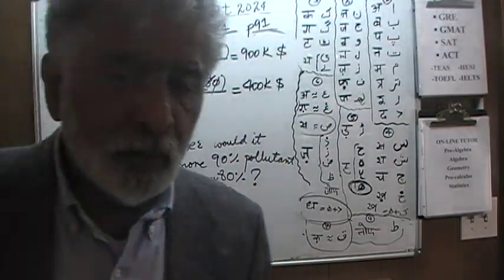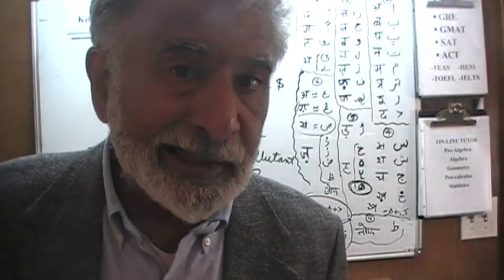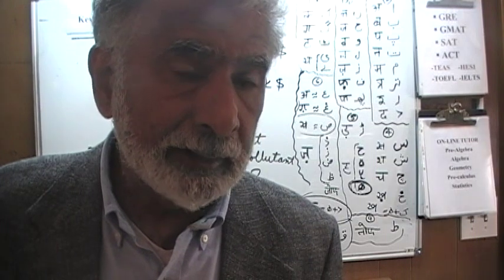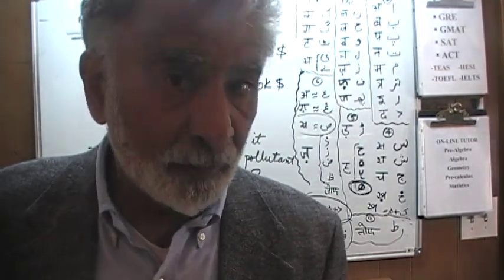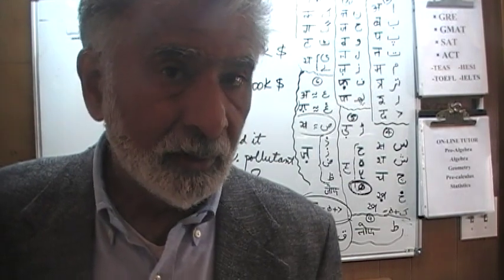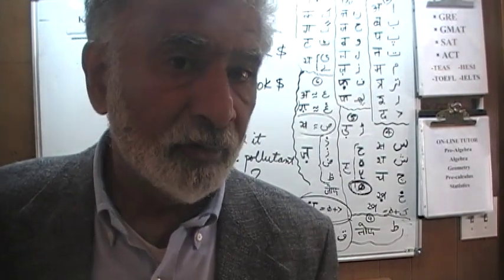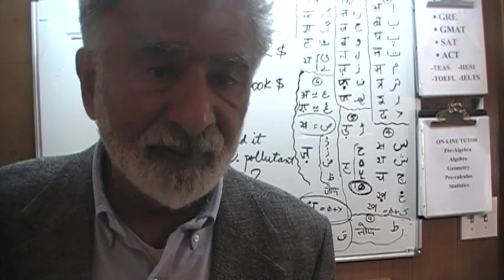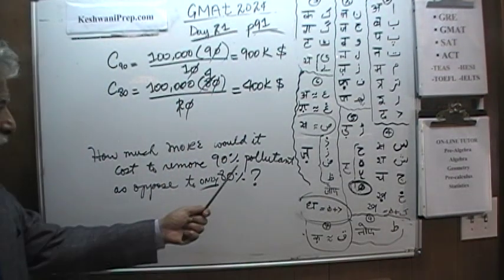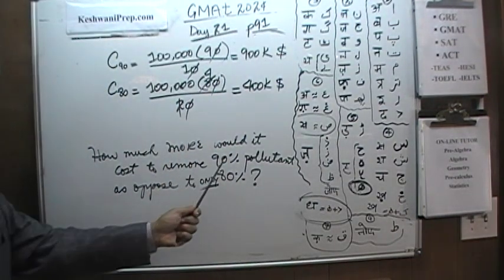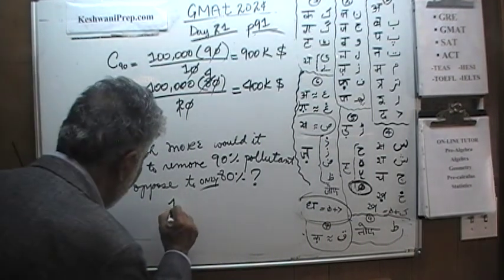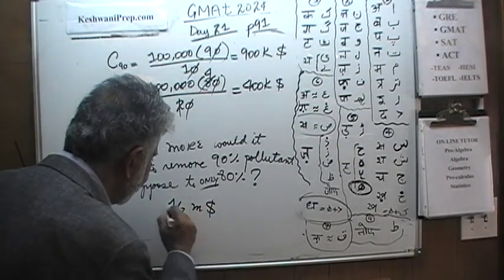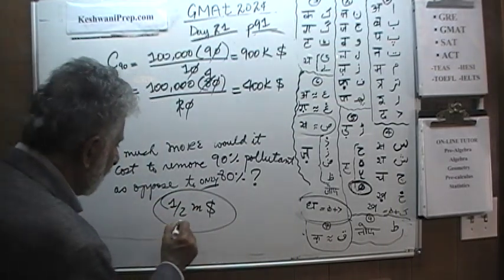In other words, in order for us to be able to remove up to 80% of the pollutant from the pond, it will cost only $400,000. But if you want to go extra 10%, from 80% to 90%, the cost goes up astronomical. Cost goes up by half a million dollars. How much more would it cost to remove 90% of the pollutant as opposed to 80%? The answer is half a million dollars. It will cost $500,000.